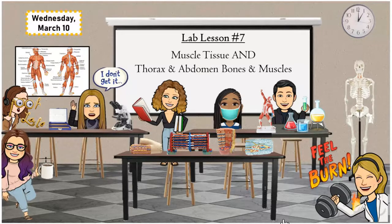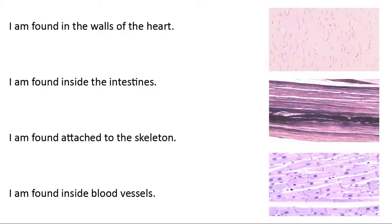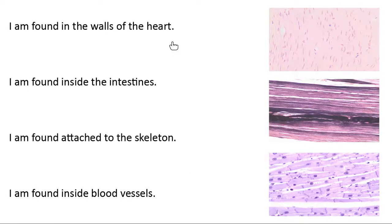Let's start by looking at the activity we did with our classmates before class today. When we came in, we looked at some images of our different types of muscle tissue, and then we used those images to help us match up some of the locations, features, or the way they contract. I'm going to do some line drawing here to connect things. Before I start matching, we need to name our types of muscle tissue that we see here. Let's start with the one at the top.